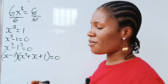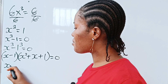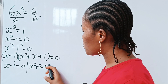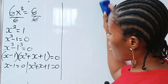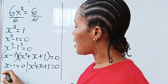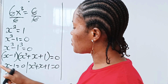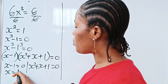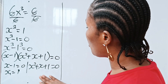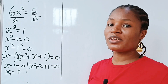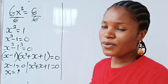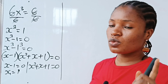Now we can write that x minus 1 is equal to 0, or x squared plus x plus 1 is equal to 0. From the first equation, if we transpose 1 to the other side it becomes plus 1, so x equals 1. This is the first value of x.